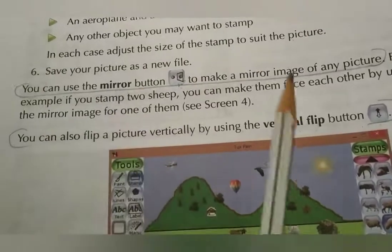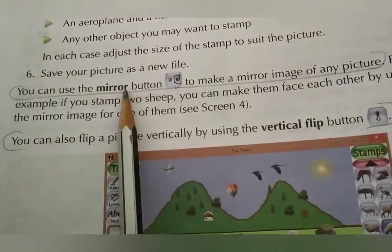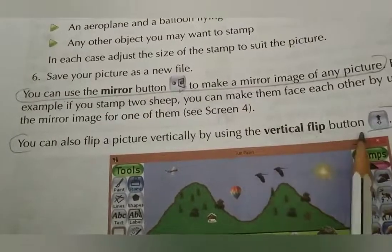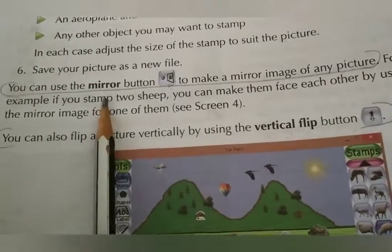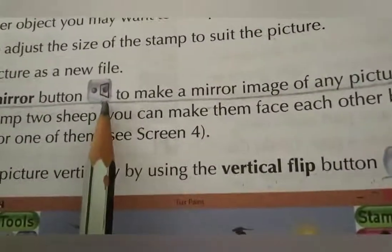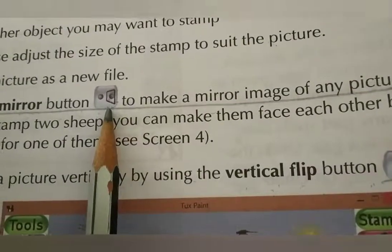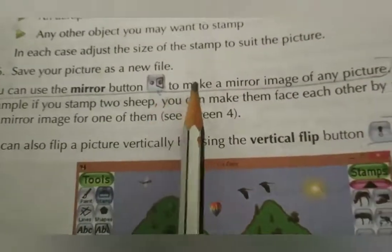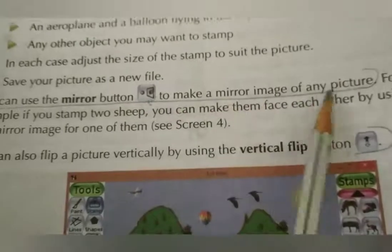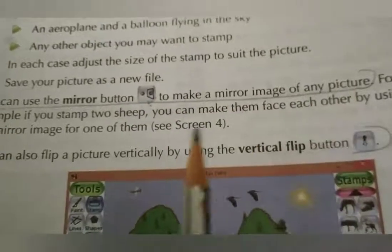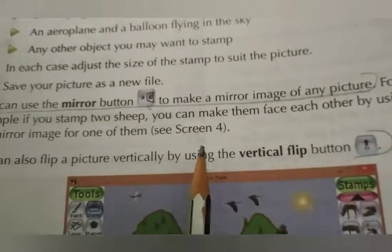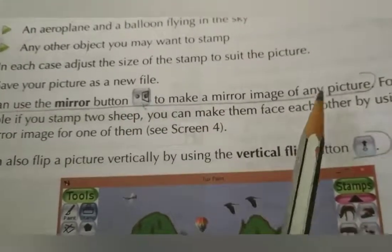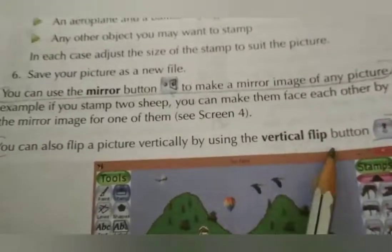One is the Mirror button and the other is the Vertical Flip button. The icon of the Mirror button — this is our Mirror button's icon. What the Mirror button does is make a mirror image of any picture. So whatever picture you are using, if you click the Mirror button you will get a mirror image.